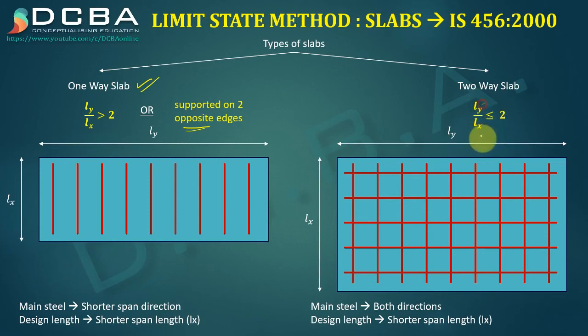A slab supported on only two opposite edges will form a one-way slab regardless of whether LY/LX is less than or greater than 2. I hope this concept is clear. In the next lecture we will see the steps involved in the design of slabs and solve some numericals. That is it for today's lecture — thank you.